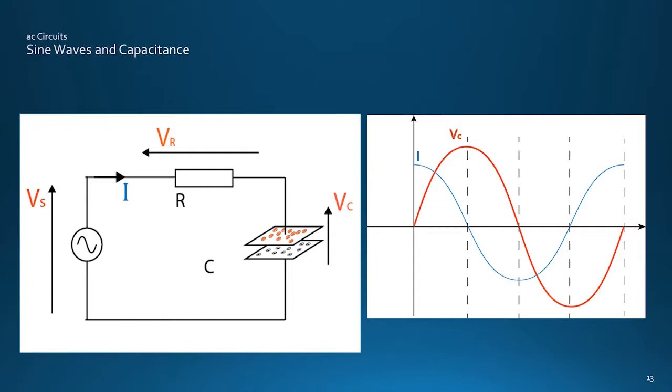In this circuit, with the resistor and the capacitor, the sine wave supply voltage Vs will increase from zero, pushing a current I around the circuit, and forcing charges onto the conducting plates, building up the capacitor voltage Vc.